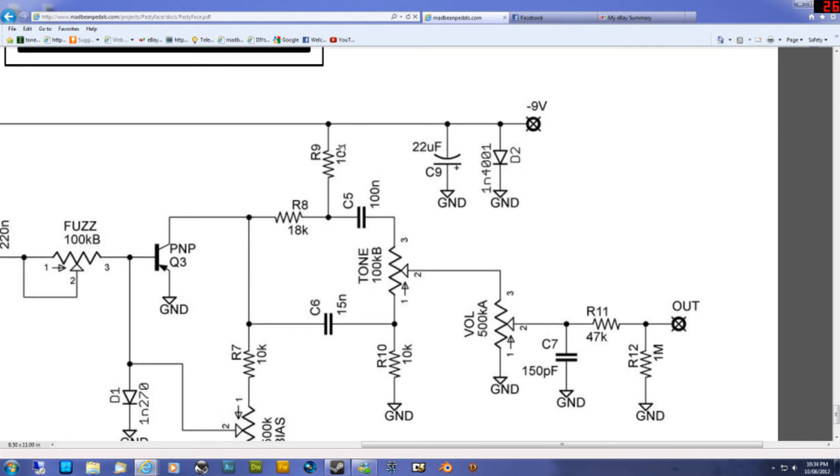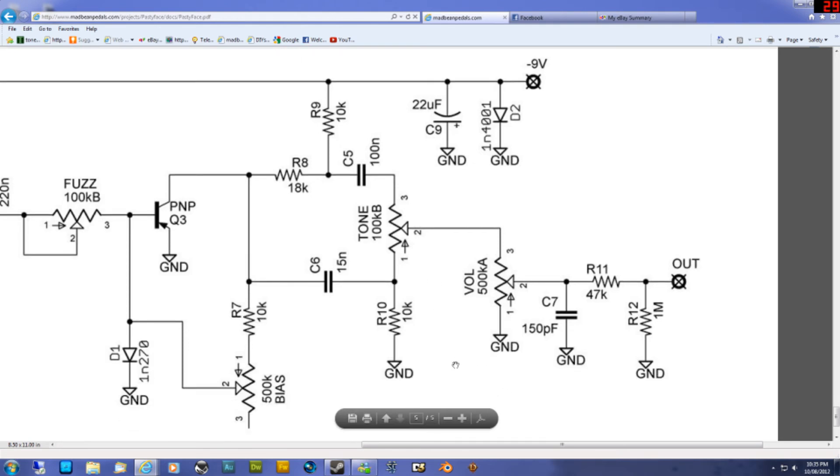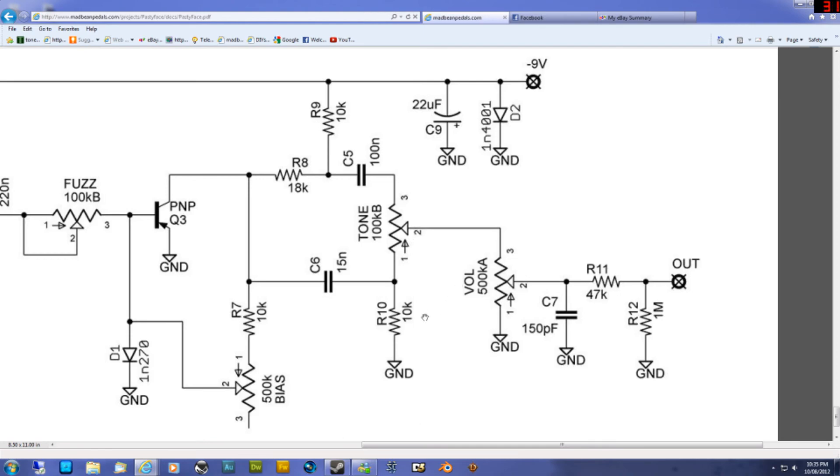One of the mods was to change R9 and R8 around, so you get more voltage into the circuit. So R9 will be 18K and R8 will be 10K. The other one was to increase R10 down here to 33K. You actually end up getting more bass towards the end, and the volume goes up as you turn the tone up a bit. That sort of changes the tone, but you get more output that way as well.